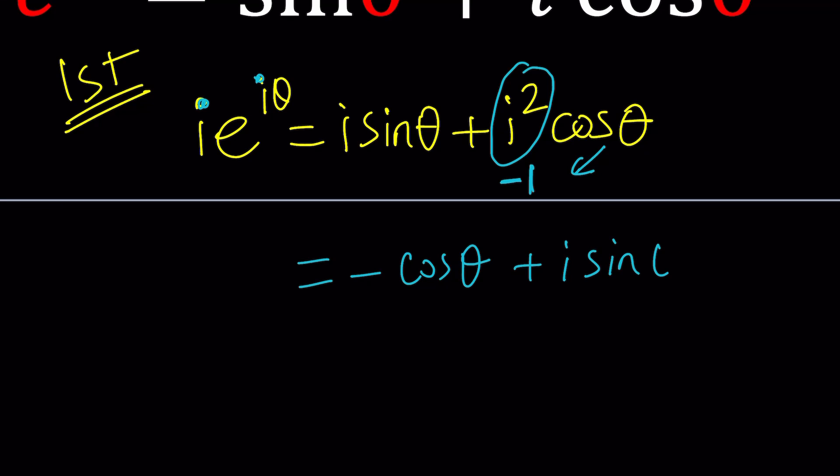If I had cosine theta plus i sine theta, I was going to be like yes, I got Euler's formula for e to the i theta, but this is not it.